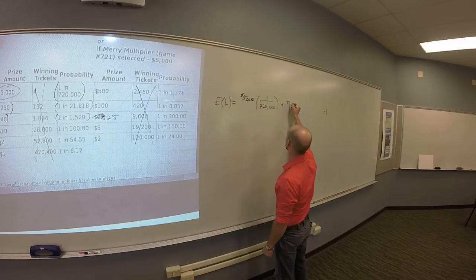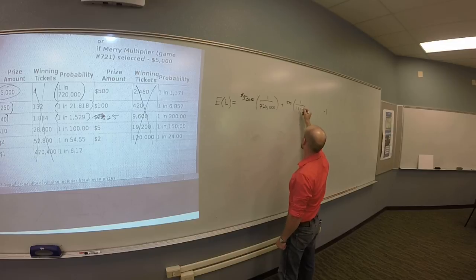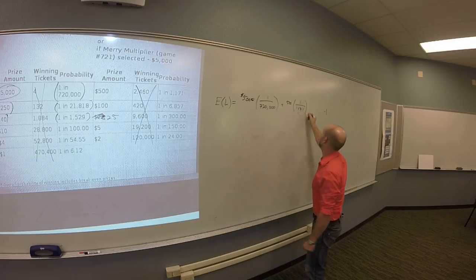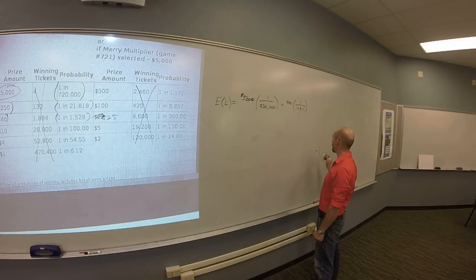Okay, and then I have to account for the one that's five hundred. So that's five hundred and the odds of that are one per 1171. Why is there this minus one floating on the edge of the board? That's going to account for your cost. Okay, so I need to remember at the end to subtract one for the cost of my ticket.